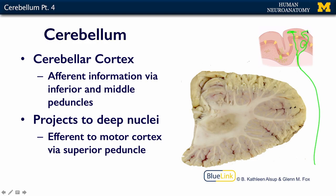The Purkinje cells then take all of this information and send it back out, down to the deep gray matter of the cerebellum. So information is coming into the cerebellum, going up to the cortex, up to a Purkinje cell, and then back down through the cerebellar white matter to synapse in one of these deep cerebellar nuclei.